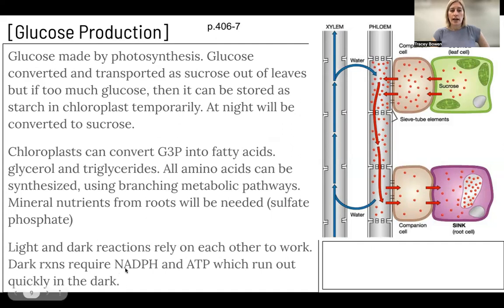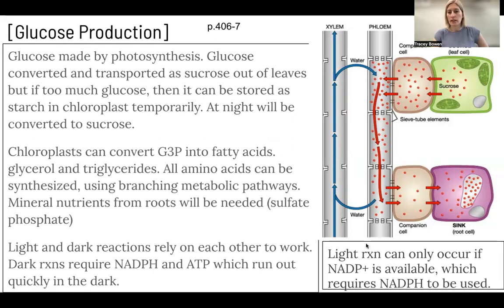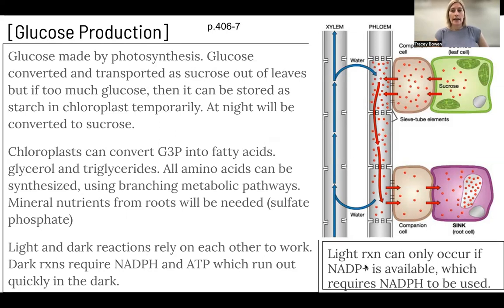The light and dark reactions rely on each other. The dark reactions — the light independent reactions — require NADPH and ATP, which will quickly run out in the dark. If there's no more NADPH because the electron transport chain isn't working, the dark reaction will slow down or stop. The light reactions can only occur if there's NADP+, which requires NADPH to be used. That links these two processes together — they can't work independently because the NADPH/NADP+ carrier molecule is a key factor in making both systems work.